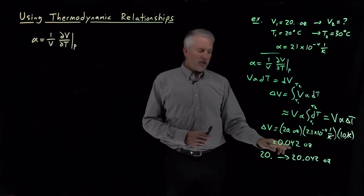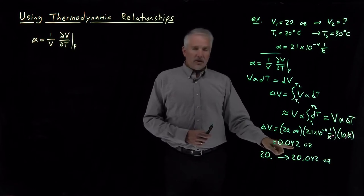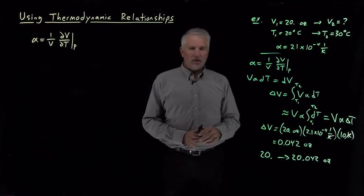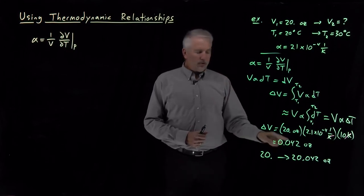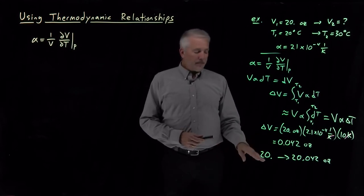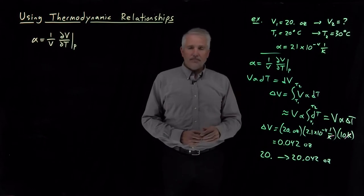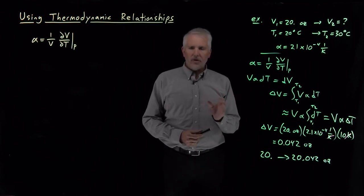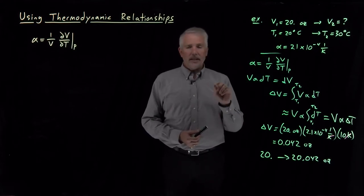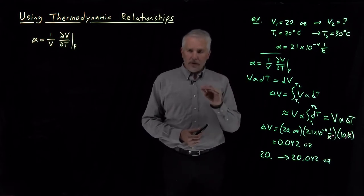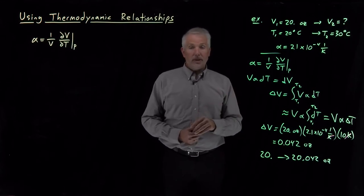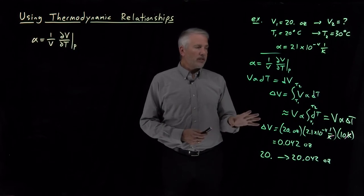That change of volume of 0.04 ounces, an ounce is about 30 milliliters, so that's in the vicinity of a little larger than one milliliter. The volume is going to only change by 0.04 ounces, a little larger than one milliliter. That's not significant if we're talking about the volume of a bottle of water. If we were doing an analytical chemistry experiment where we had filled a volumetric flask with exactly 20.000 ounces, or 500 milliliters exactly, then that volume change of a milliliter might be significant. It depends on the context of the problem whether that's significant.